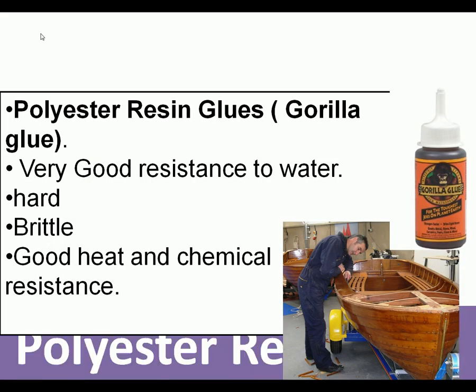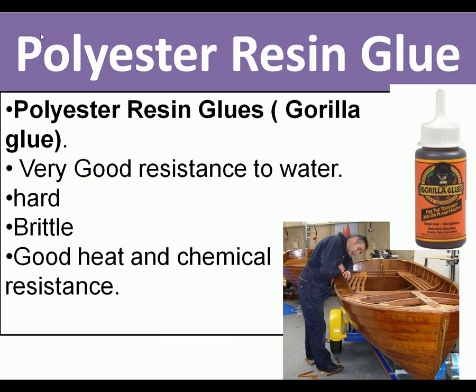The next thermosetting plastic is polyester resin glue, which you might have used. It has very good waterproof resistance, it's brittle but has good chemical and heat resistance. Once it sets you can heat it and it won't melt or soften.